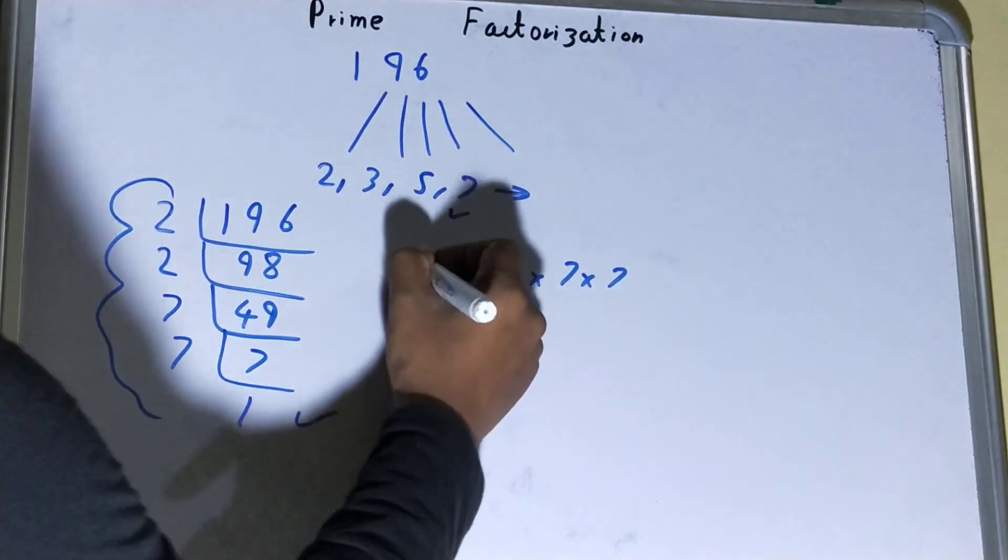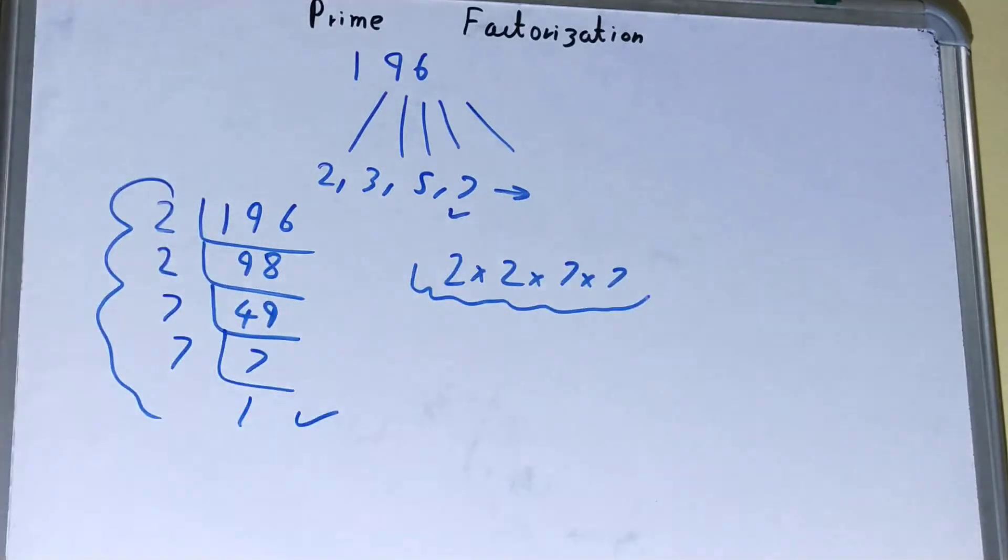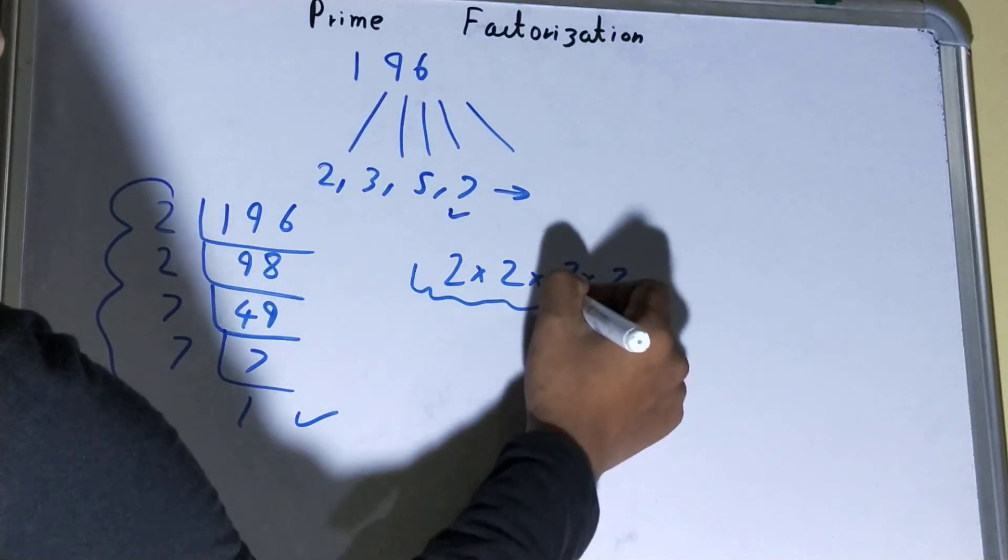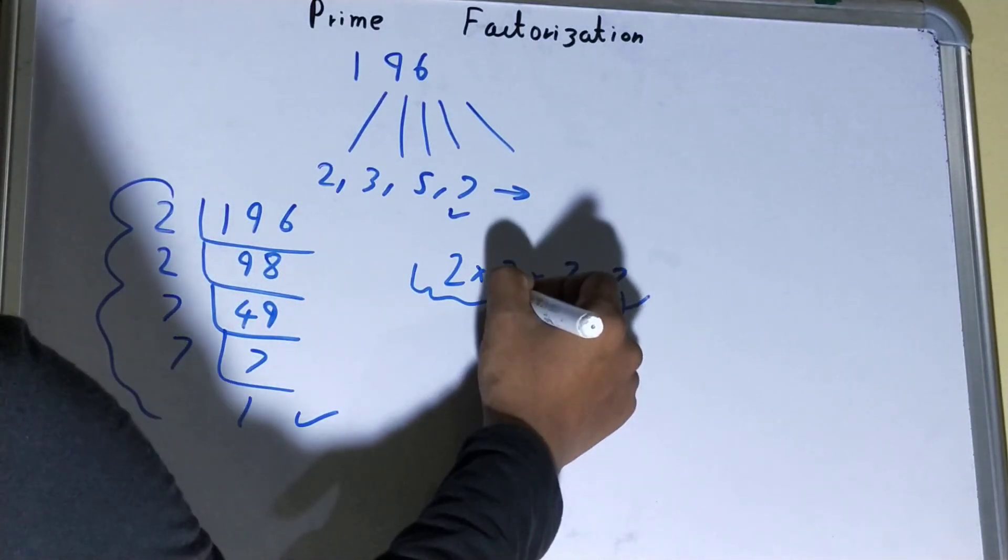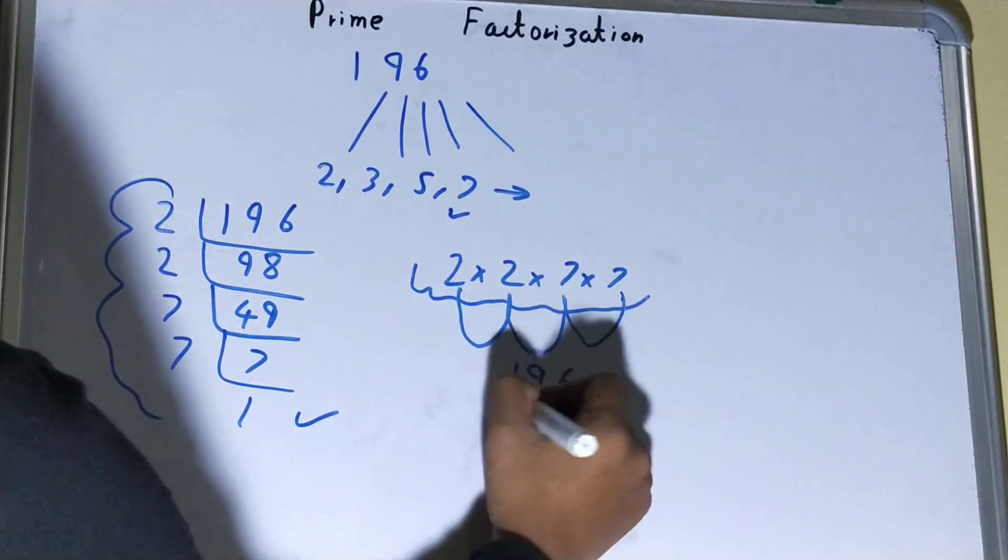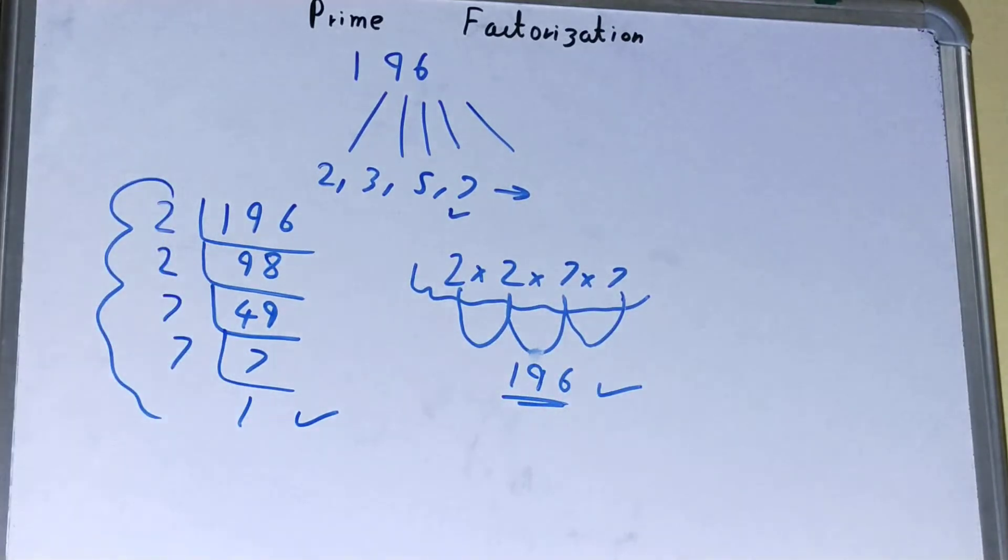If you want to check whether it is right or not, you can check it by multiplying these factors. 7 × 7 = 49, 49 × 2 = 98, 98 × 2 = 196. That is, you'll get the number back again. If you don't get the number back again, you need to redo it.